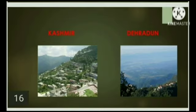Children, observe this picture carefully. It is showing an area present between hills. It is called a valley. A valley is an area present between hills or mountains. Kashmir and Dehradun are the best examples of valleys present in India.